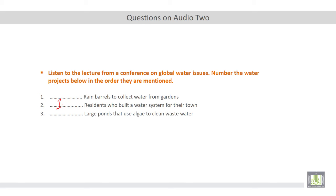The second project was, yes, large ponds that use algae to clean waste water. Yes, the second project again was about large ponds that use algae to clean waste water. Yes. And the third project was about rain barrels to collect water from gardens. That's good.